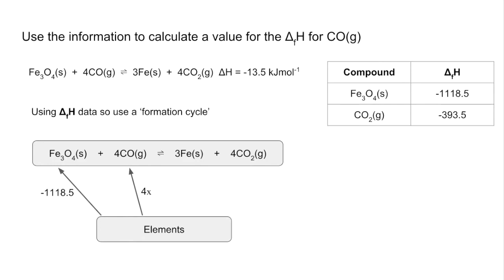Four elements and then the final arrow would be going from elements to four carbon dioxide so that's in the table as well. Four times minus 393.5.